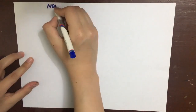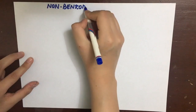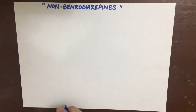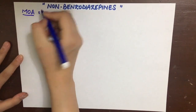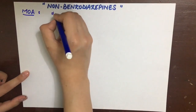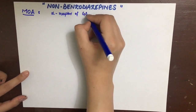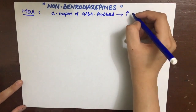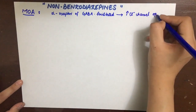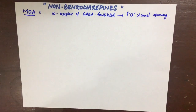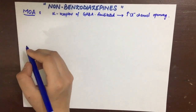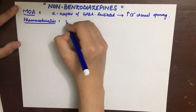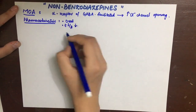Now let's talk about non-benzodiazepine hypnotics. They basically act on the benzodiazepine receptor on the GABA-A complex, mediating and facilitating GABA action, and increase chloride channel opening. The pharmacokinetics are simple: they are orally administered, have a short half-life with a rapid onset, and are metabolized by cytochrome P450.